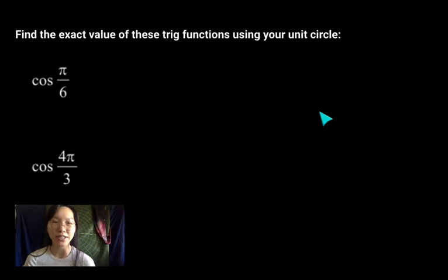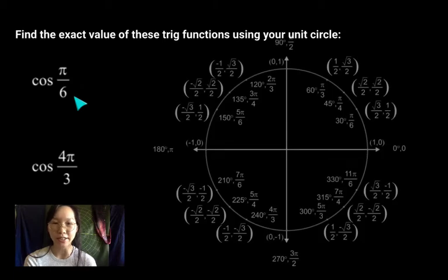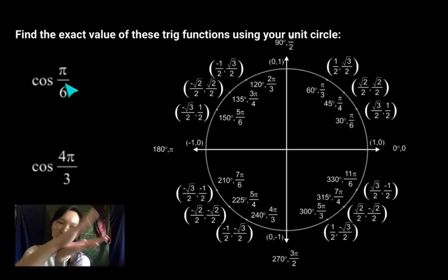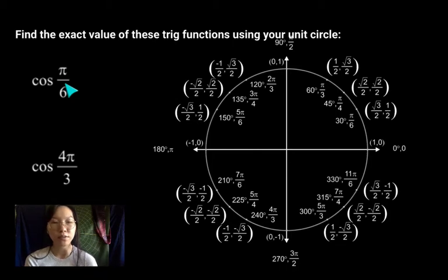Let's go ahead and jump into the first question. The first question is, what is cosine of pi over 6? Remember, this is an angle. Even though it doesn't look like it, it's the exact same as 30 degrees.